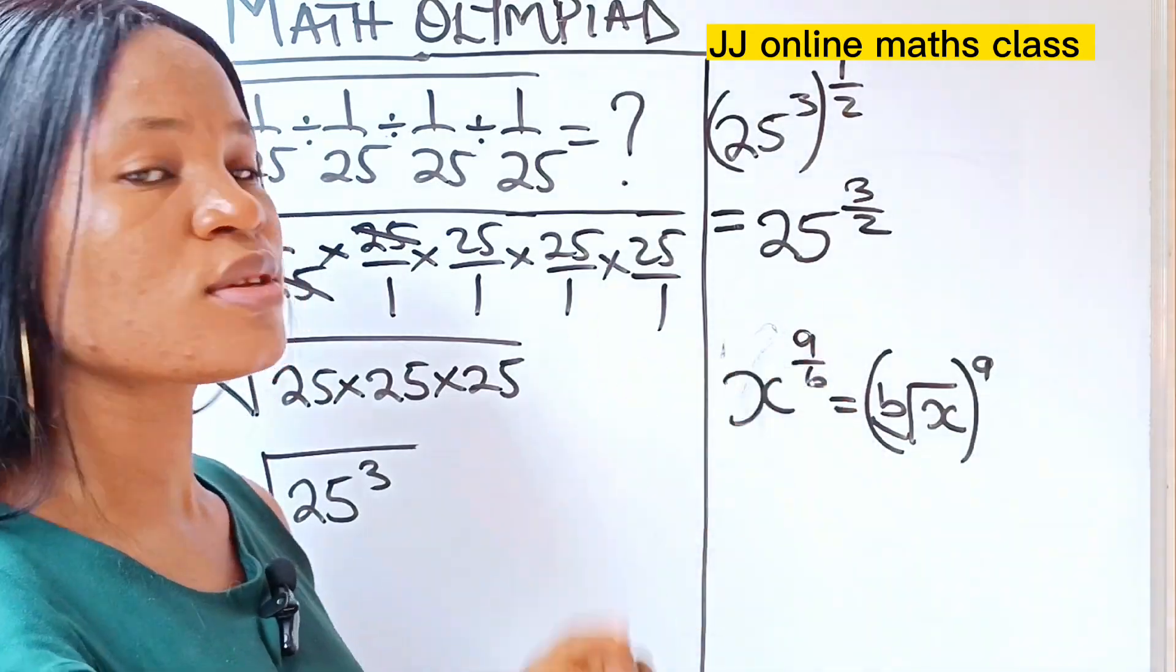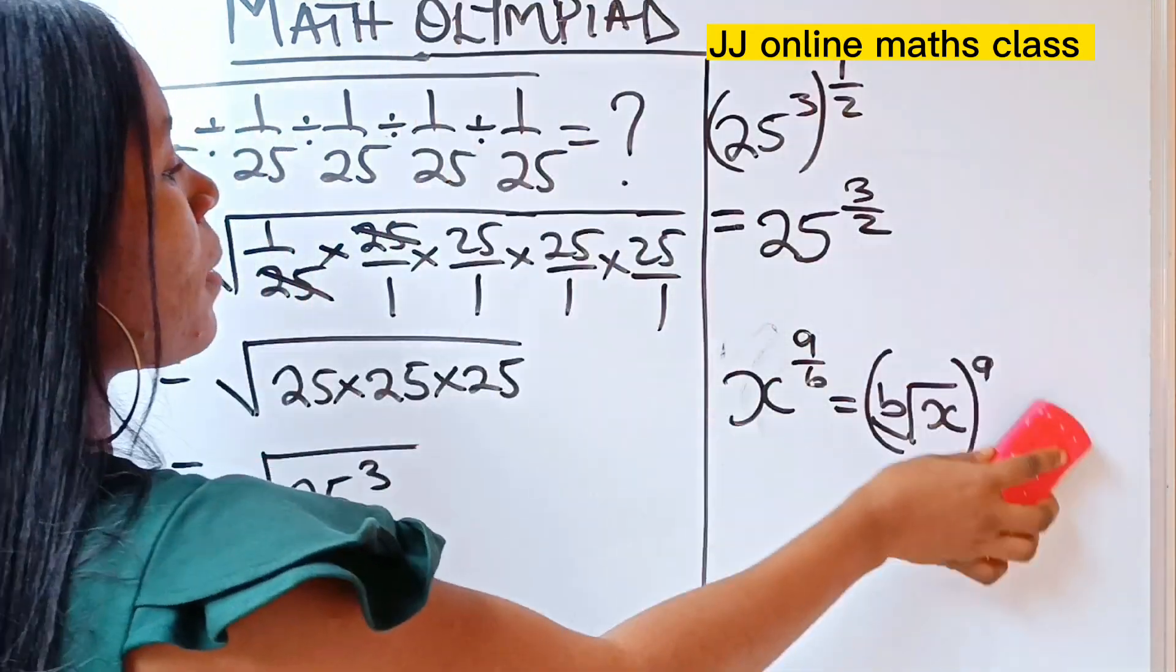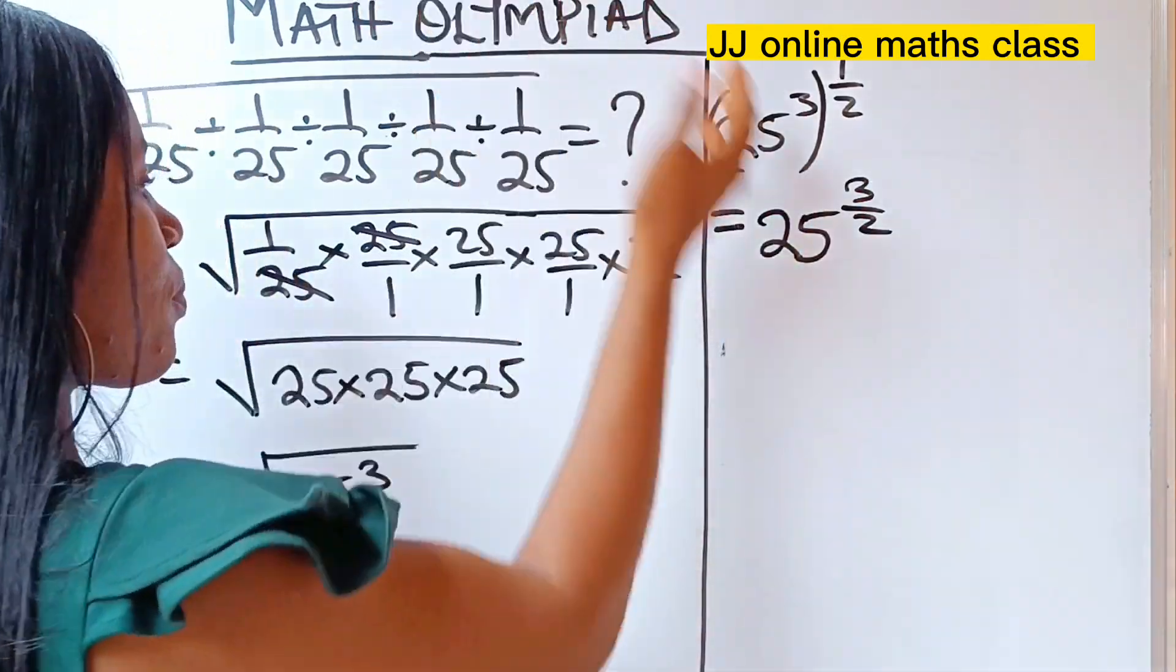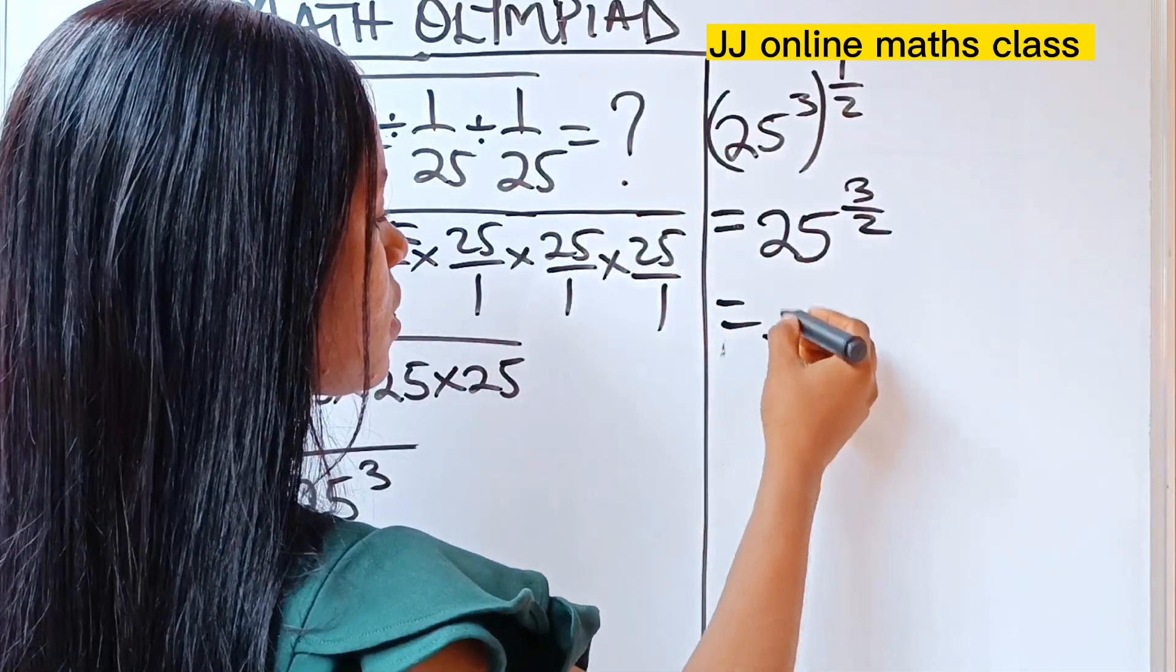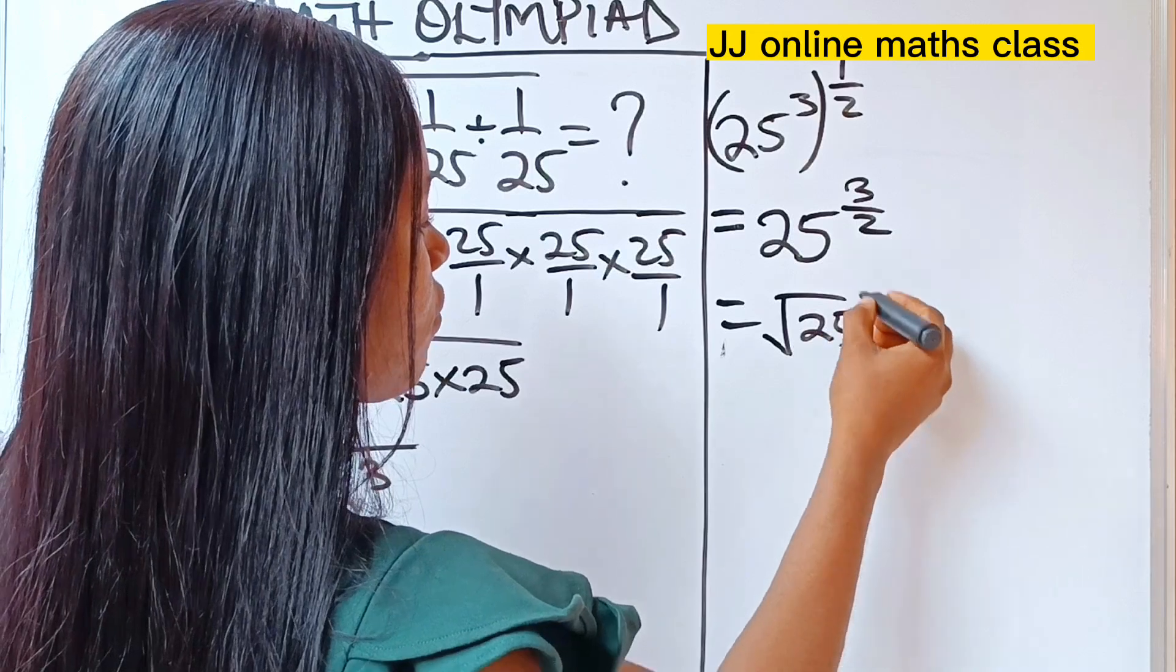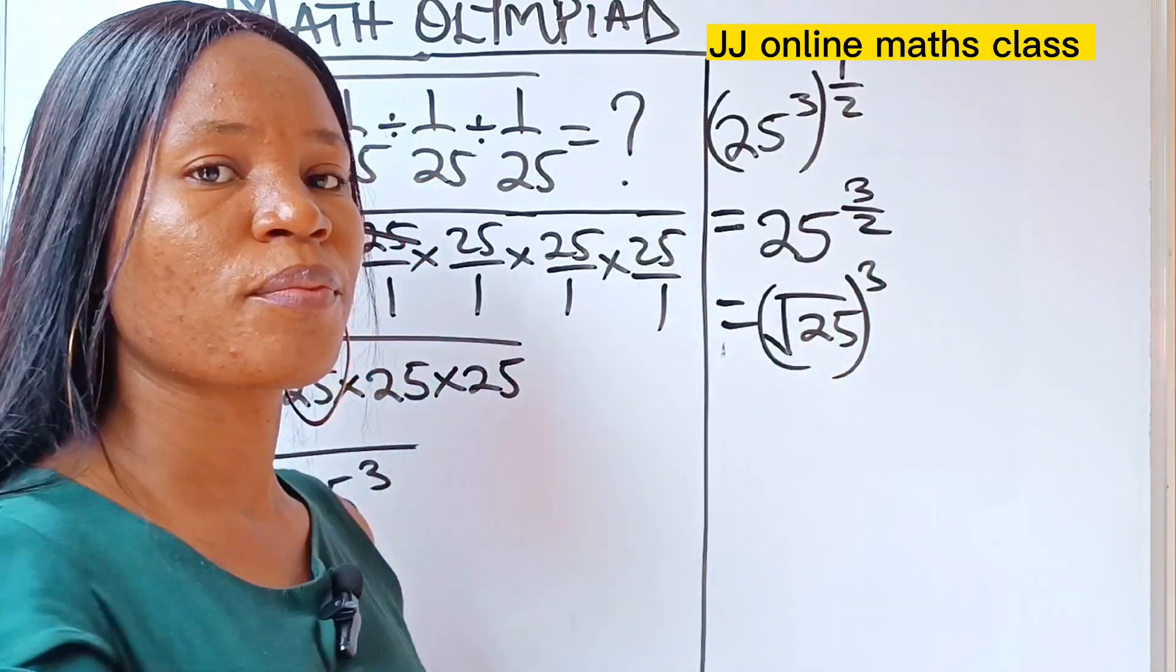So we are going to apply the same thing here. It means that 25 to the power of 3 over 2 is the same thing as square root of 25 raised to the power of 3.